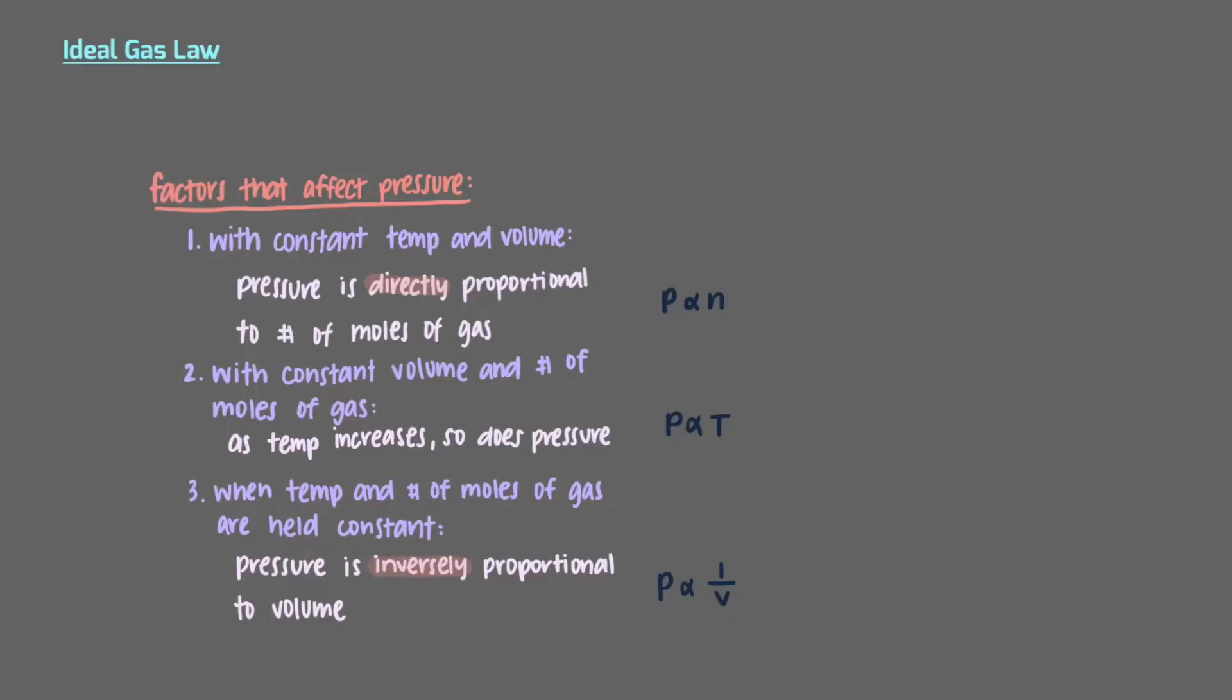We can put all of these relationships together into a single equation using a constant of proportionality, r. This equation is P equals nRT over V, also known as the ideal gas law.